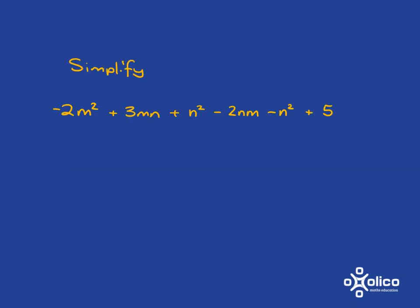If we're asked to simplify a monster like this, the first thing we need to do is identify the like terms. So here we have a term with an m squared. Are there any other terms with m squared? And if we look through, we see that no, there are no other terms with m squared, so there are no like terms to go with that one.